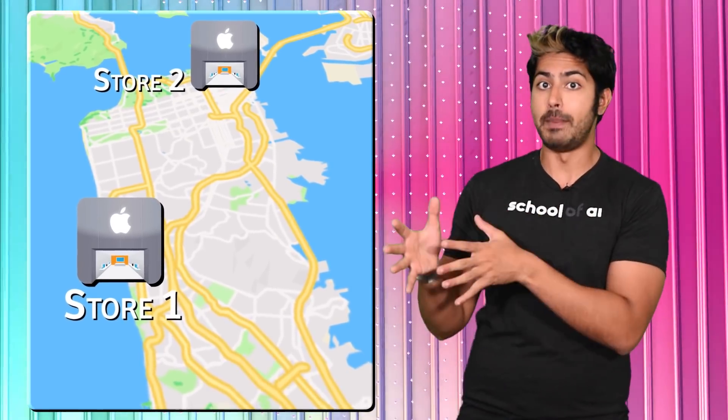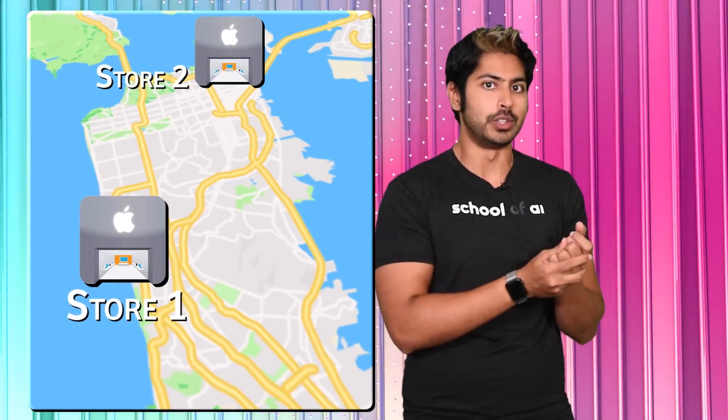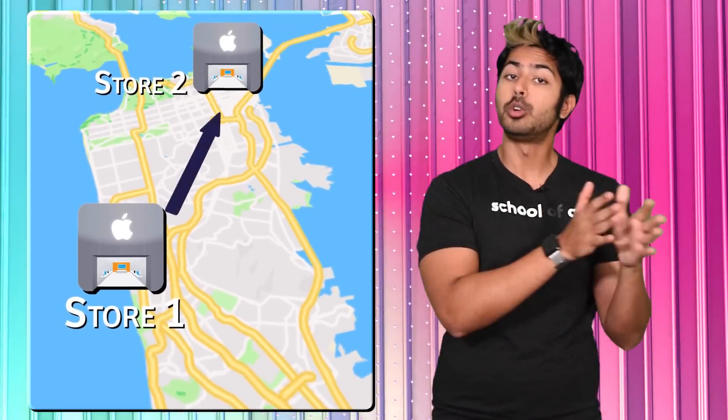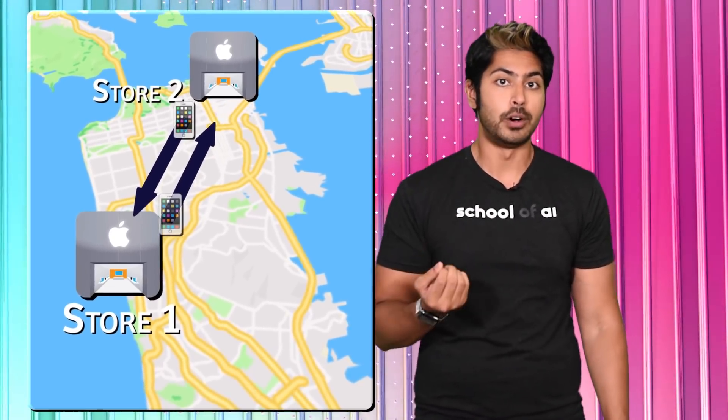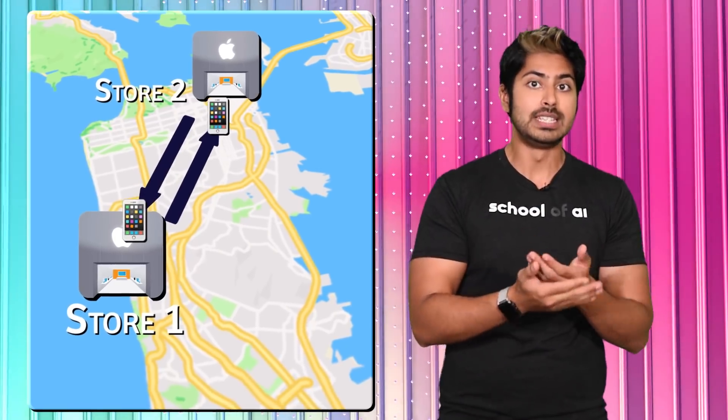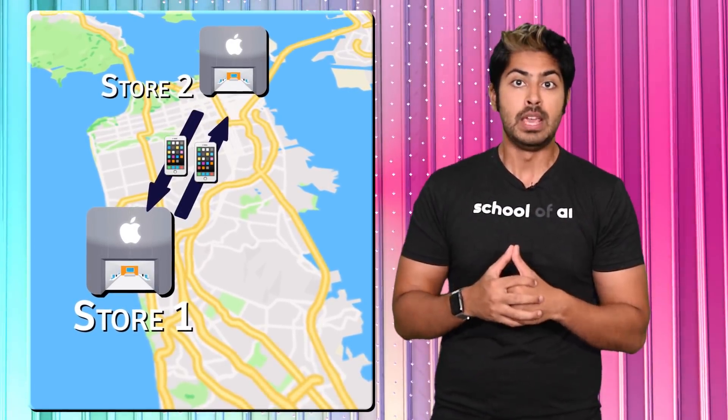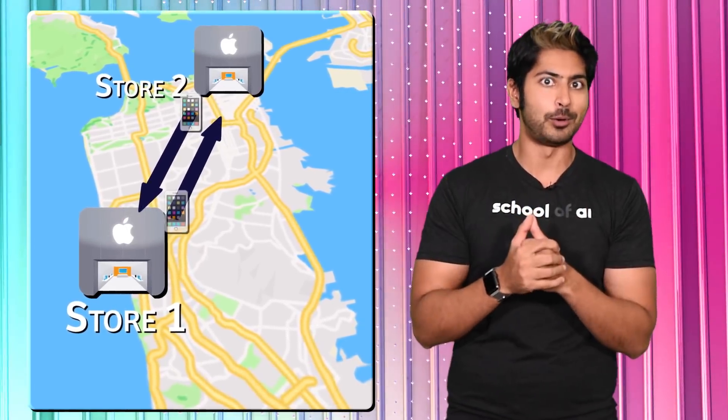Since one of our retail locations will have more demand than supply in terms of new iPhone XS orders delivered from HQ, we can move iPhones overnight from one location to the other. That way we can make sure that we have enough iPhones at each location to maximize our profit. There's a reason we're a trillion dollar company, right?